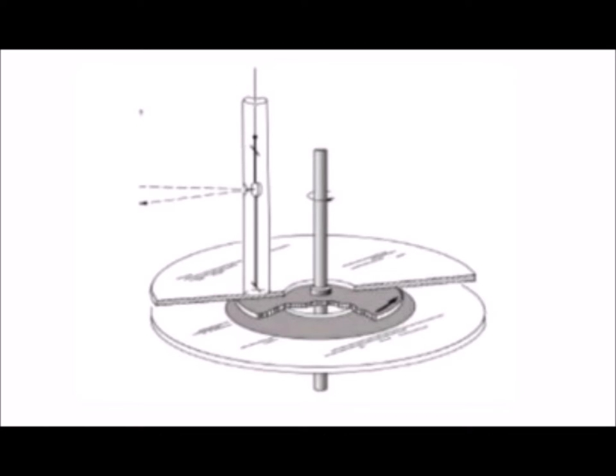Both of these experiments were performed more than a century before it was discovered that electrons have both an angular momentum and an intrinsic magnetic field. However, any rotation causes an alignment effect of the angular momentum with the axis of this rotation.